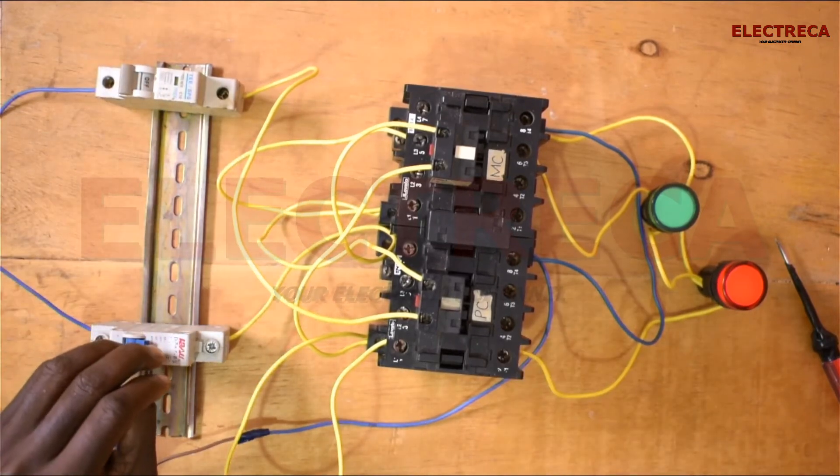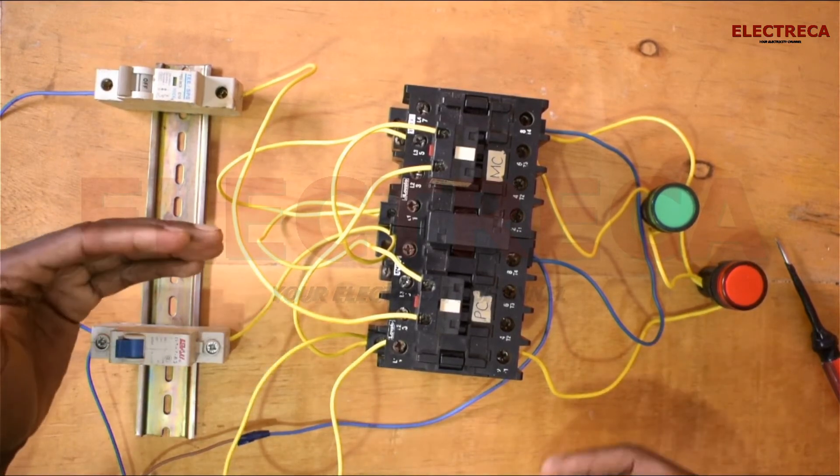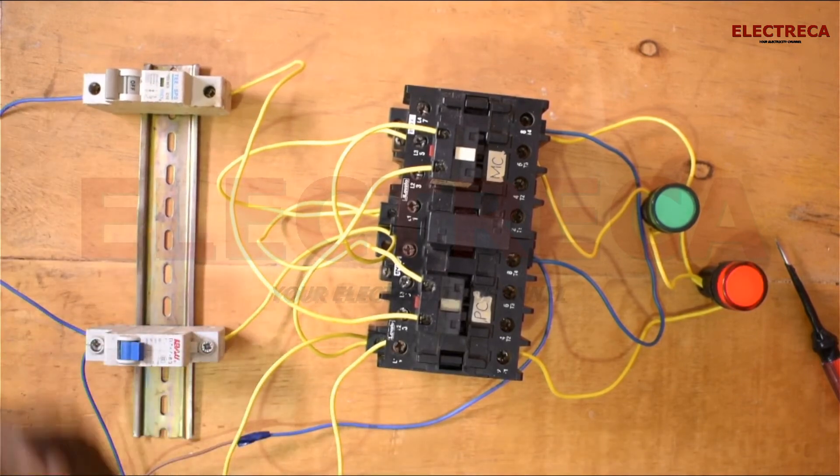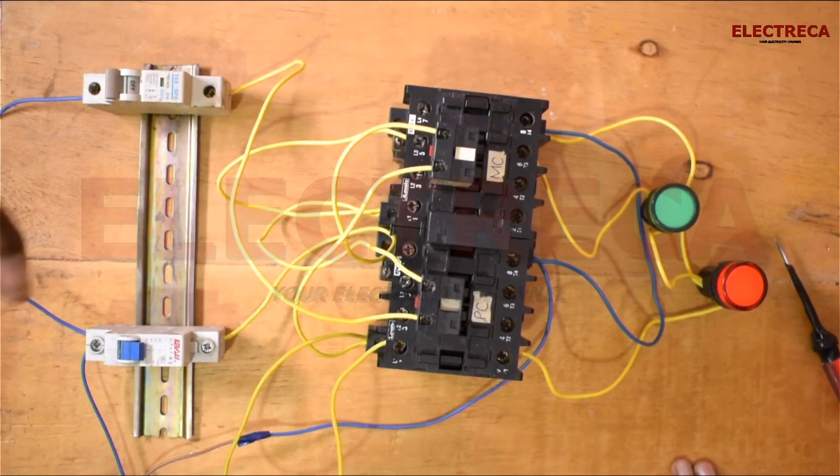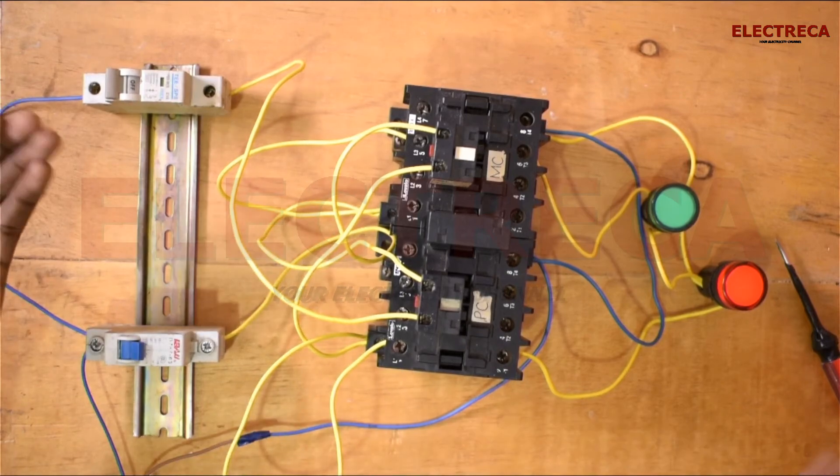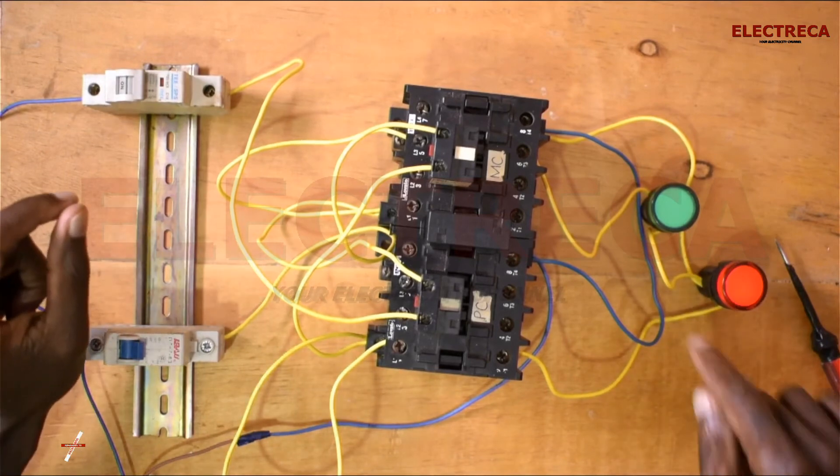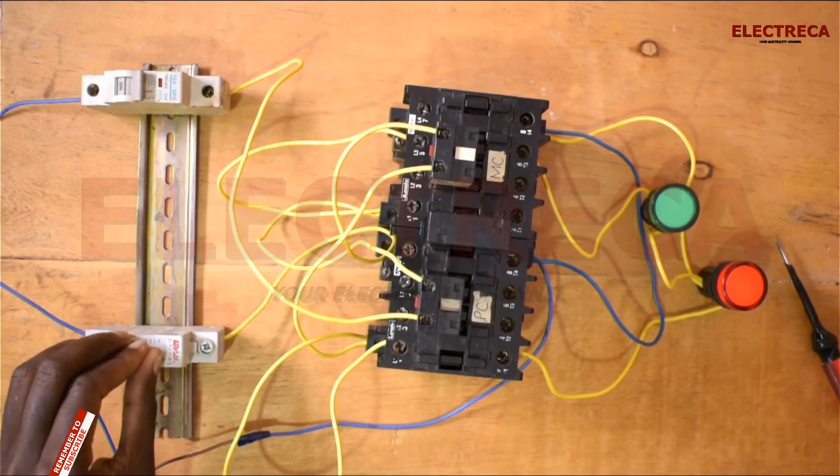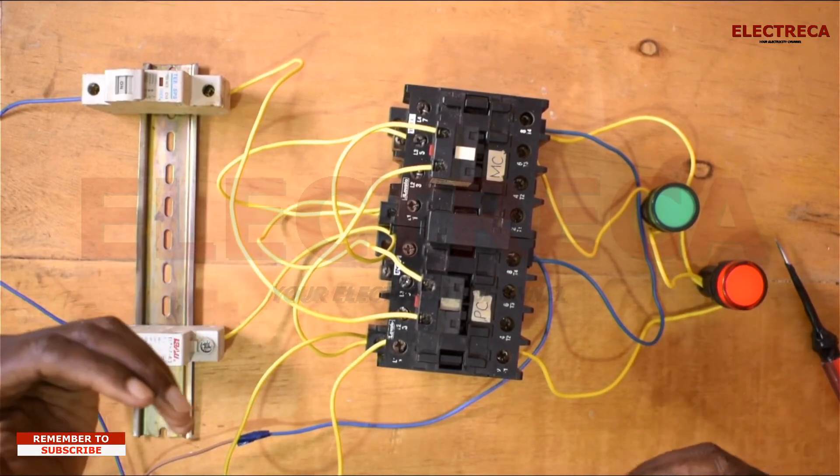So until you remove the main, that's when this will come in because you had already switched it on. This is really safe. If, for example, your backup was running the way this is now, and then maybe someone went and the utility power is back, it's back. You only have a light somewhere that will show you that it's back, but it won't be able to engage until you disengage the backup contactor.